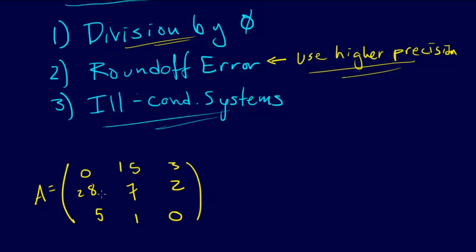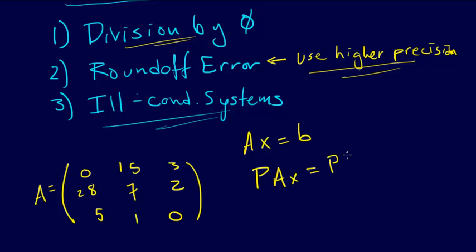What we can do is called pivoting. We're trying to solve the system AX = B, but instead of solving AX = B, what if we solve the system PAX = PB, where P is a permutation matrix. A permutation matrix, as you may recall, is just a matrix that swaps either the rows or the columns.